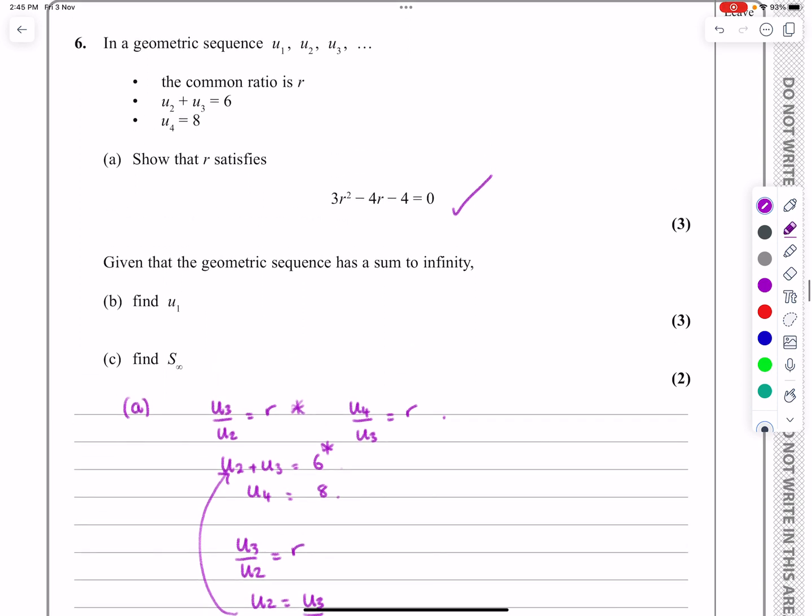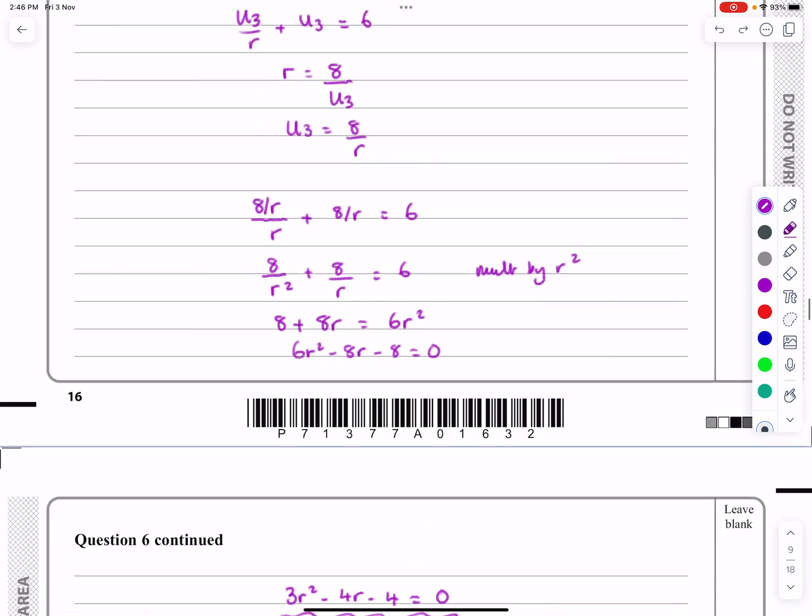Part B says, given that the series has a sum to infinity, so let's not jump past that, that's important. Given that the series has a sum to infinity, can we find U1? Well, if it has a sum to infinity there, then the modulus of R has to be less than 1. So let's solve my quadratic first of all.